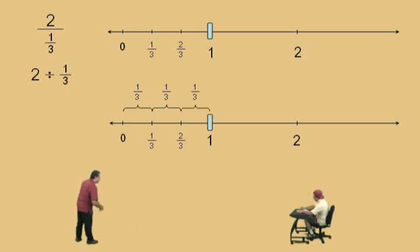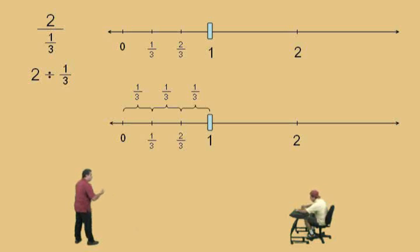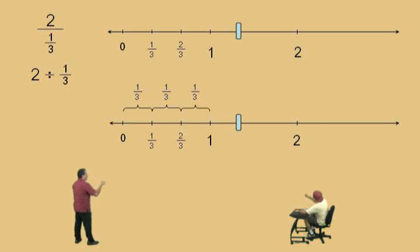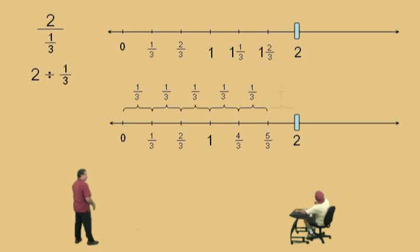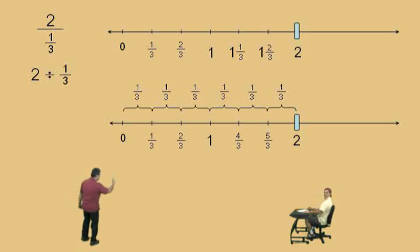Now Charlie, how many 1/3s does it take to make up a 1? Three of them. Keep that in mind. With this problem, we want to see how many 1/3s go into a 2. So let's keep going: 4/3, 5/3, 6/3. So to answer this question, how many 1/3s goes into a 2? Six! Six of them — it's right there on the number line.